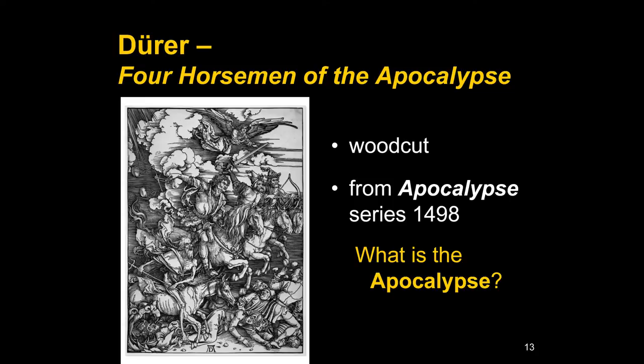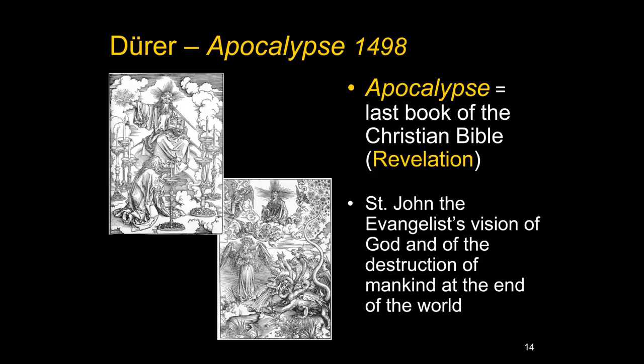The term 'Apocalypse' refers both to devastating end-of-the-world events in a general sense and to the last book of the Christian Bible — the Book of Revelation. It is supposed to be the vision St. John the Evangelist had when exiled to the island of Patmos. In this vision, he sees God on his throne, a book with seven seals, and the Lamb — presumably a symbol of Christ — opens the book. Every time he breaks a seal, destruction rains out on mankind. There's also the Archangel Michael fighting the dragon that represents the devil.